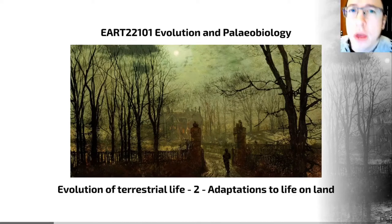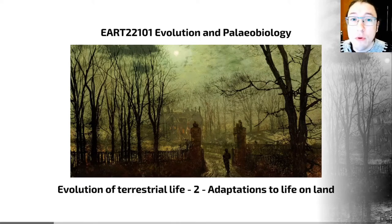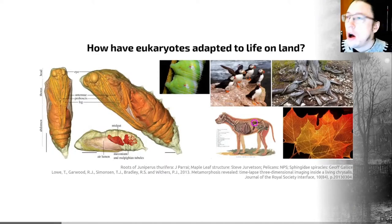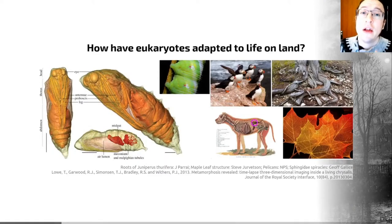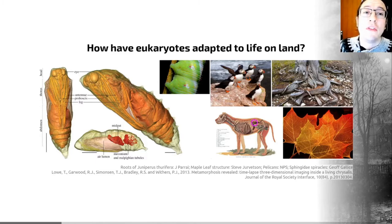Hello and welcome to video number two, in which we're going to have a quick whiz through the adaptations that we see in terrestrial groups to living on land. There are a whole range of different stresses that life on land provides to an organism that it does not experience if it was living in the ocean. So for organisms to live on land, they need to develop a series of adaptations to overcome these stresses.